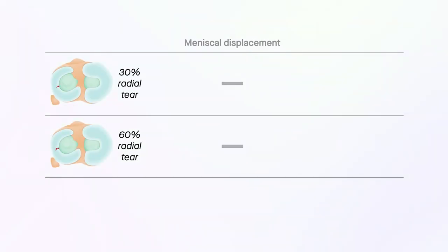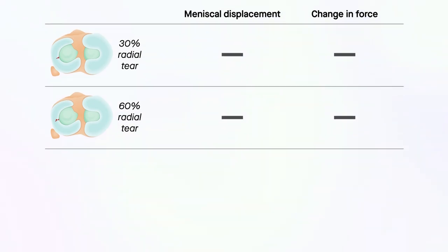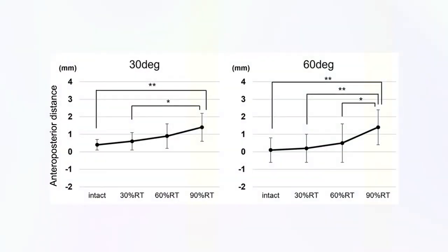The 30% and 60% tears did not cause meniscal displacement or affect the force through the LM under axial loading. However, the 90% tear caused significant anteroposterior displacement under loading at both knee flexion angles due to tear separation.